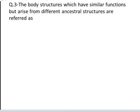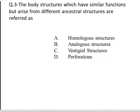The next question is: body structures which have similar functions but arise from different ancestral structures are referred to as. These are four options: A. Homologous structures, B. Analogous structures, C. Vestigial structures, D. Homoplasies. Yes, the correct answer is B, Analogous structures.